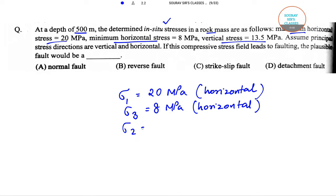The question assumes principal stress directions are vertical and horizontal. If this compressive stress field leads to faulting, the possible fault would be - so we need to comment what kind of fault will be the result or outcome.